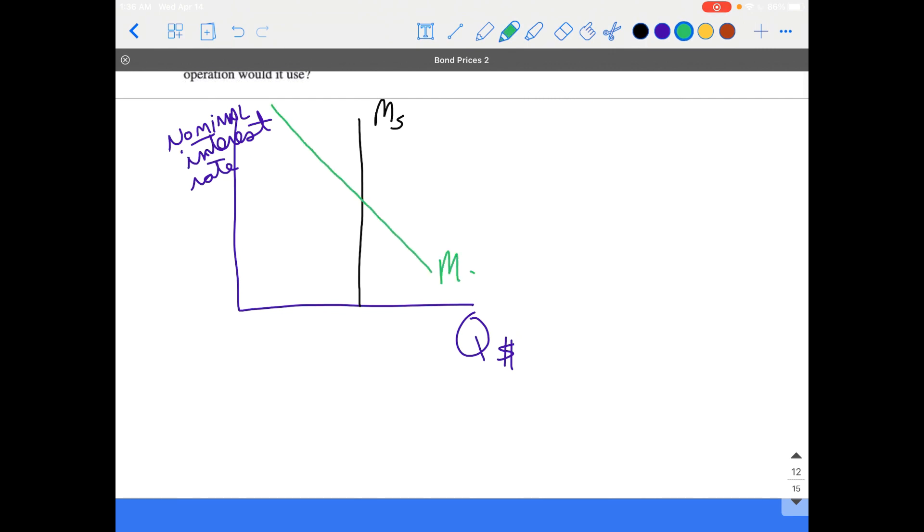The original money demand curve is downward sloping. But the thing that happened was that people are now holding less cash because they're using credit cards more. So now we've got our correctly labeled graph. Now we need to show the effect of what happened.